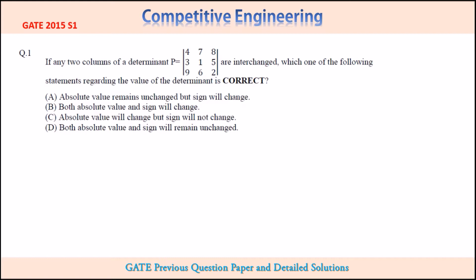The first option is absolute value remains unchanged but sign will change. Second option is both absolute value and sign will change. Third option is absolute value will change but sign will not change. Fourth option is both absolute value and sign will remain unchanged.